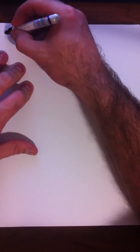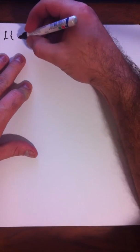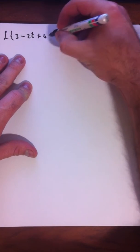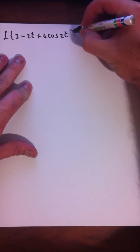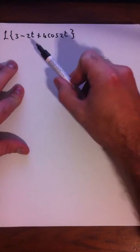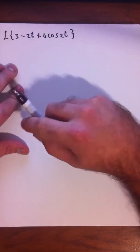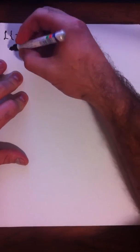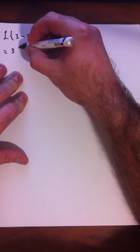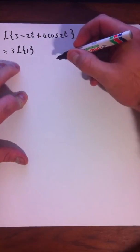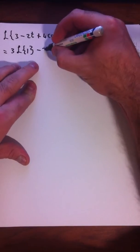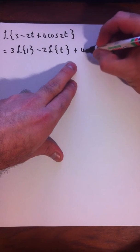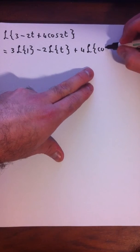Let's find the Laplace transform of the function 3 minus 2t plus 4cos(2t). Because the Laplace transform is a linear function, we can distribute. So we can rewrite this as 3 times the Laplace transform of 1, minus 2 times the Laplace transform of t, plus 4 times the Laplace transform of cos(2t), factoring out the constants.